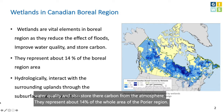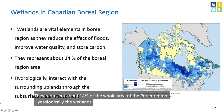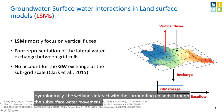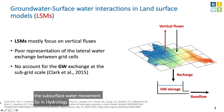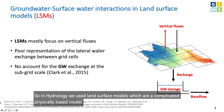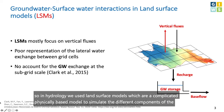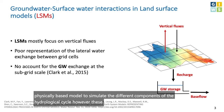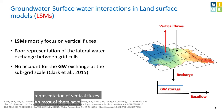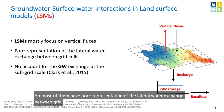Hydrologically, wetlands interact with the surrounding uplands through subsurface water movement. In hydrology, we use land surface models, which are complicated physically-based models to simulate the different components of the hydrological cycle. However, these models mostly focus on the representation of vertical fluxes, and most of them have poor representation of the lateral water exchange between grid cells and no account for groundwater exchange within the subgrid scale.